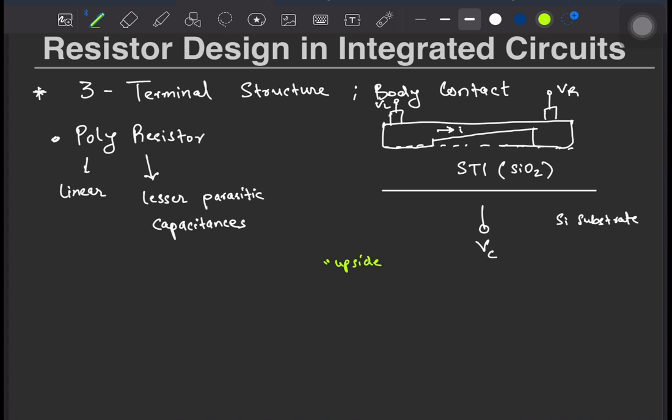It is roughly an upside down MOS system where instead of the metal, you apply the potential to the silicon substrate. The potential of the substrate Vc modulates the depletion layer width which changes the cross section across which the current can flow.